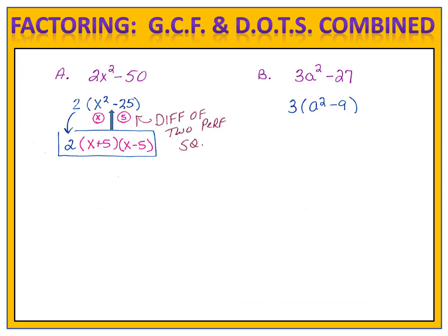Do you see something special in the parenthesis? It's a difference of two perfect squares. We can factor that binomial, a squared minus 9, into a plus 3 times a minus 3. Don't forget to bring down that common factor from earlier in the problem, and now you have factored completely.